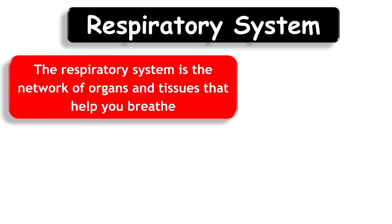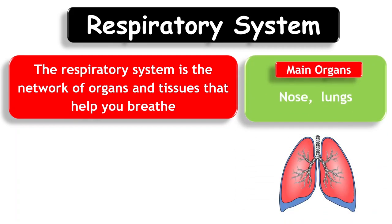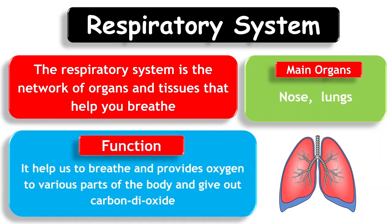Respiratory System. The respiratory system is the network of organs and tissues that help you breathe. Main organs: nose and lungs. Function: It helps us to breathe and provides oxygen to various parts of the body and releases carbon dioxide.